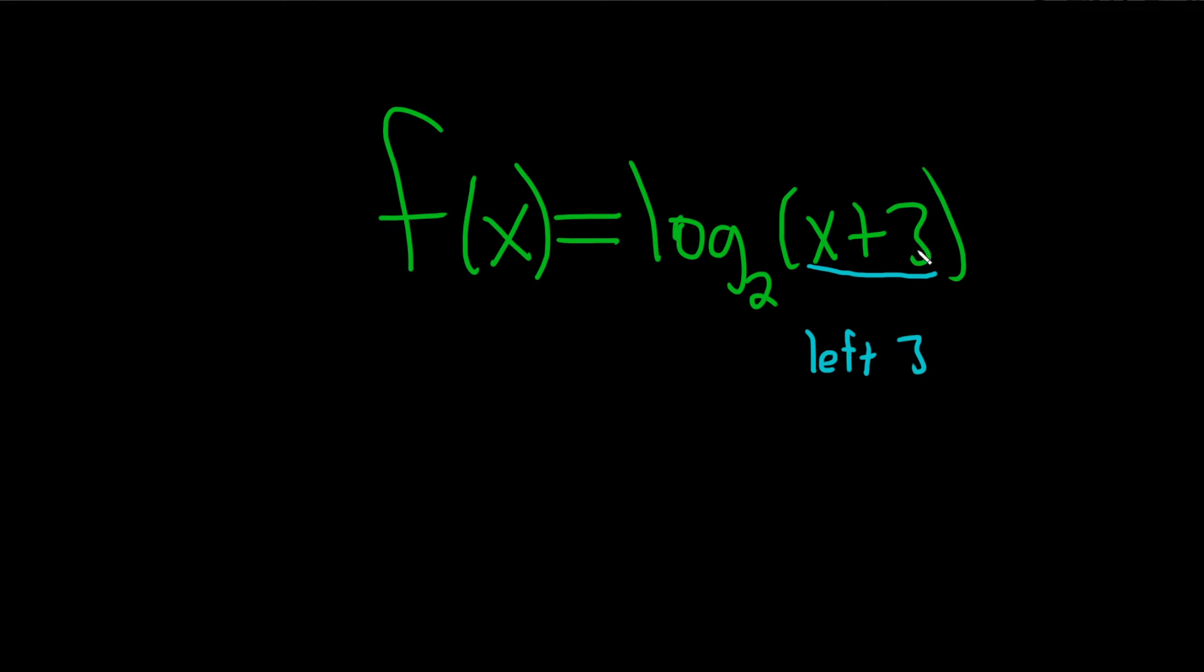So when you add 3, it's backwards, you go left. If you subtract 3, you go right. Whenever you add and subtract to an x, just think backwards. In other words, adding 3 is left, subtracting 3 is right. In this case we're adding, so it's left 3.